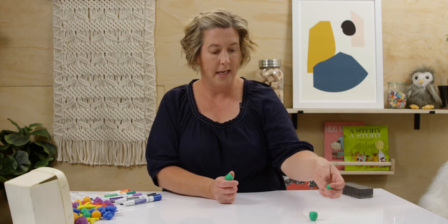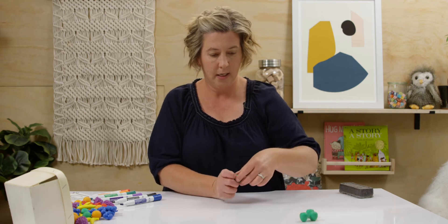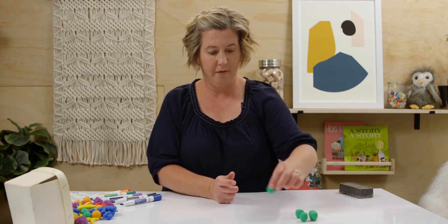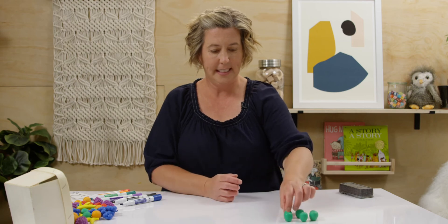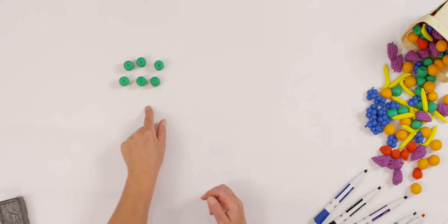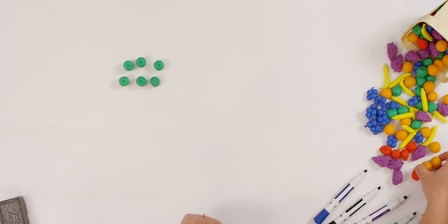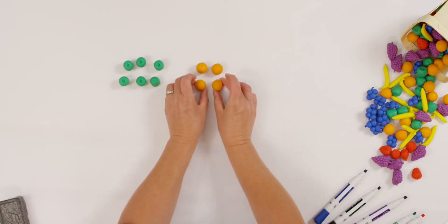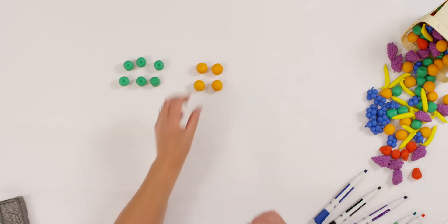One, two, three, four, five, six. Can you count out six? And then here are my oranges. One, two, three, four. Can you count out four of your other counters? Good.